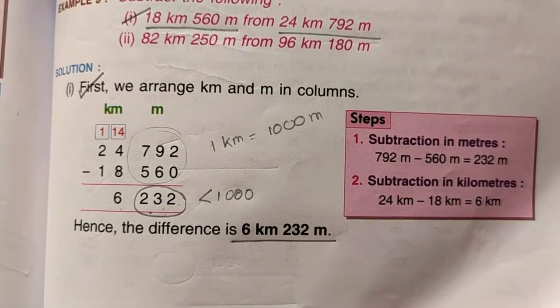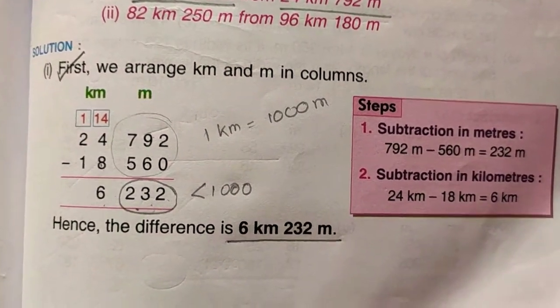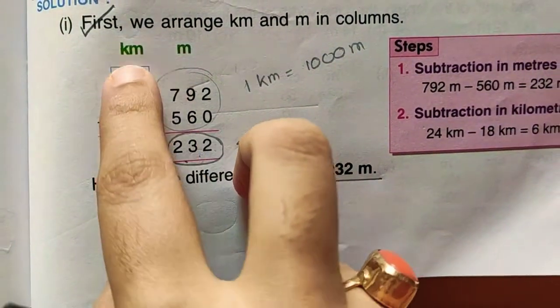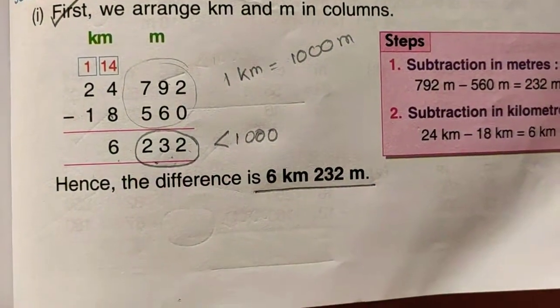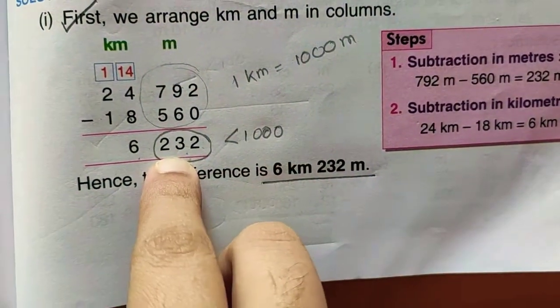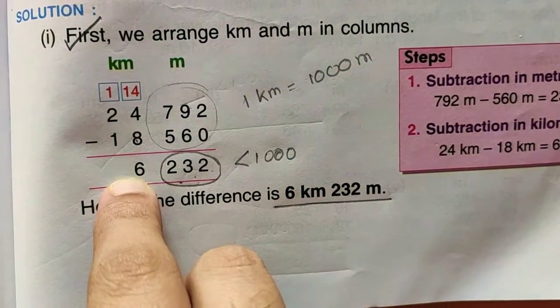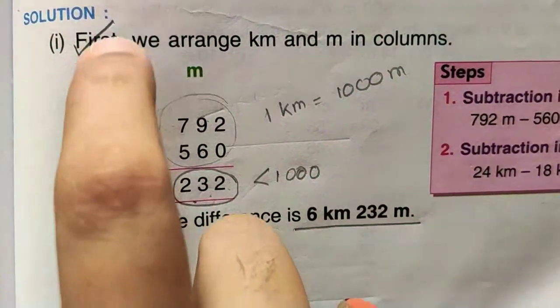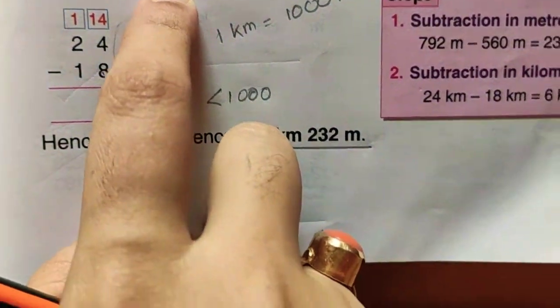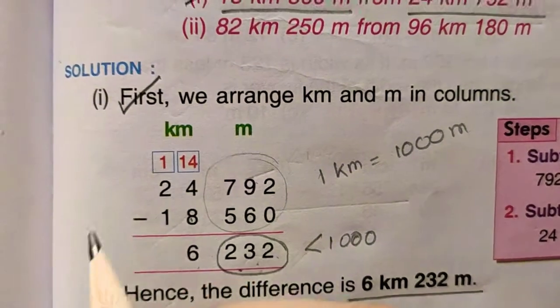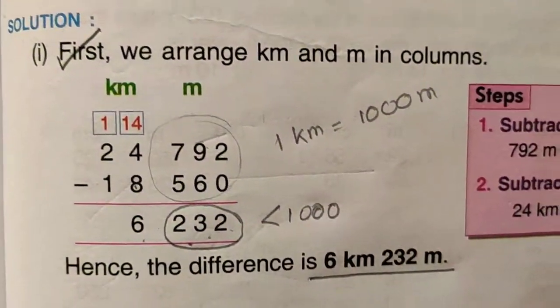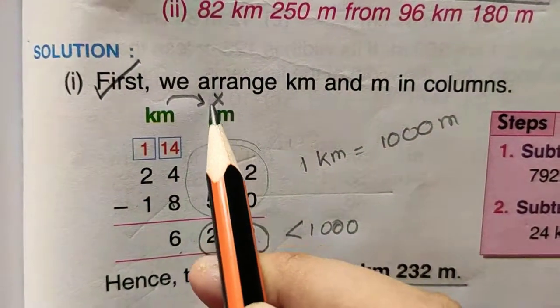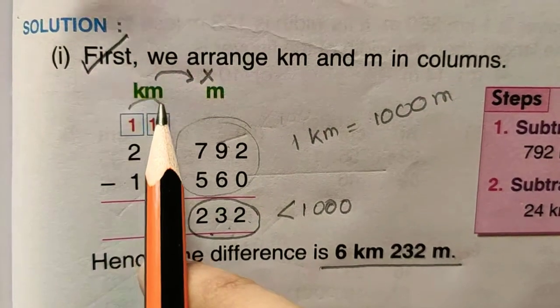So this was our subtraction without taking any borrowing. We did not borrow from kilometer to meter. See? Meter column has its own subtraction. Kilometer column has its own subtraction. No borrowing between them.